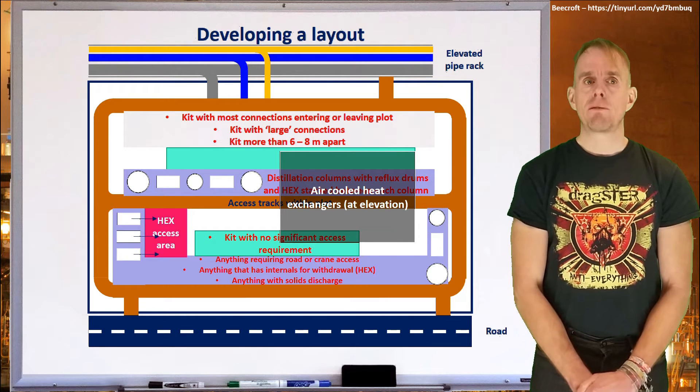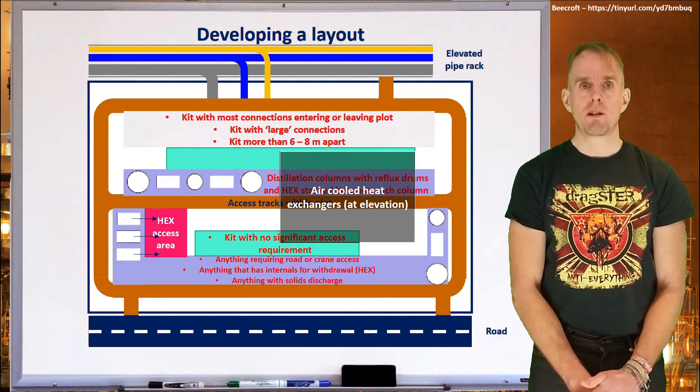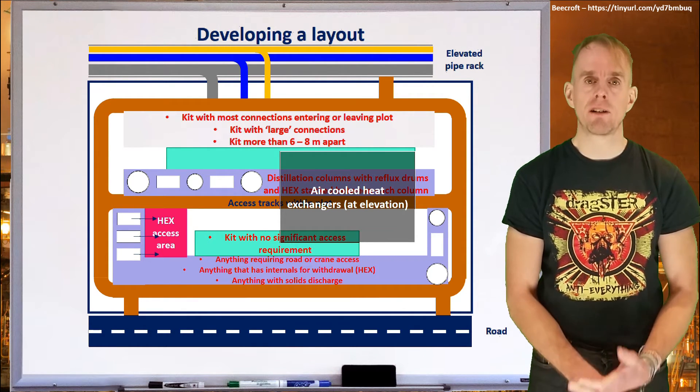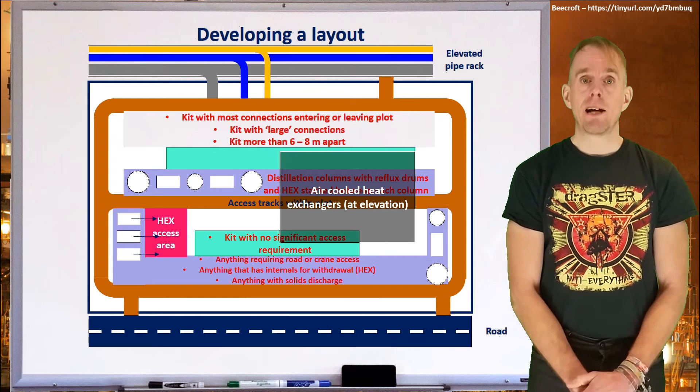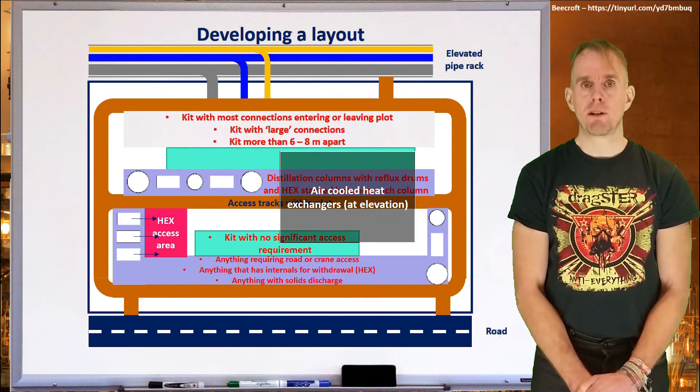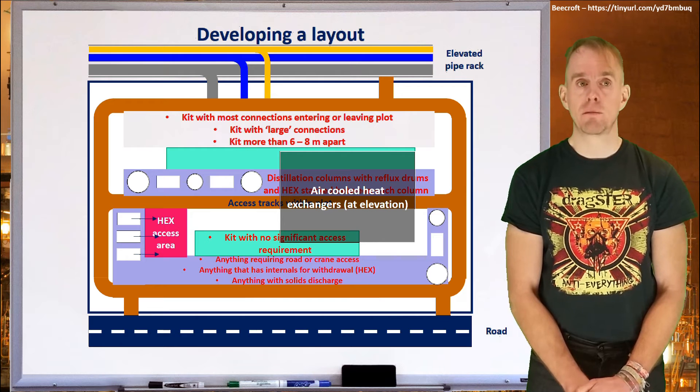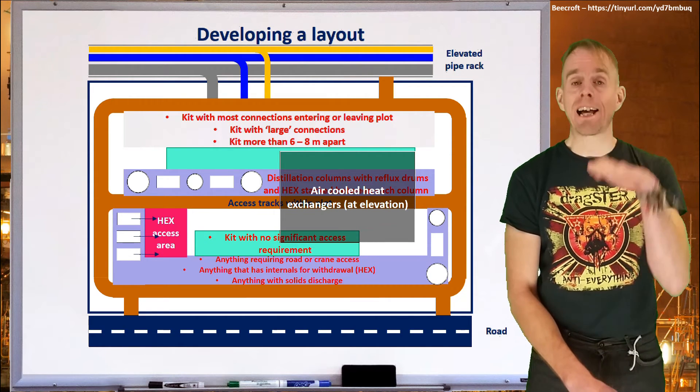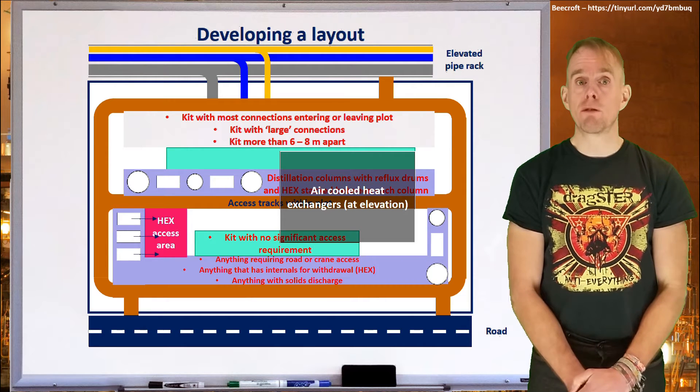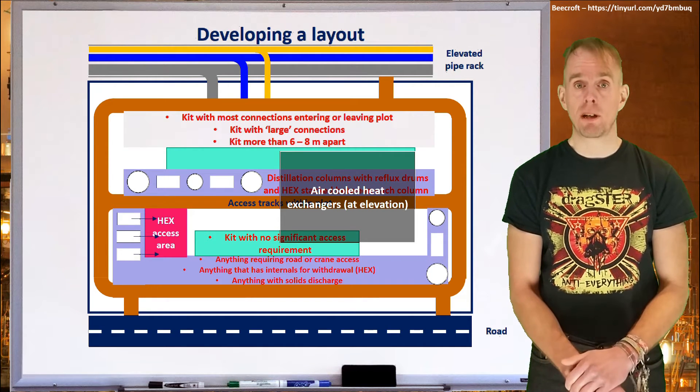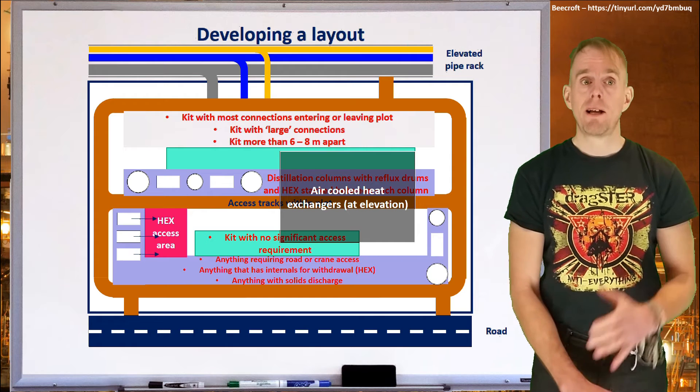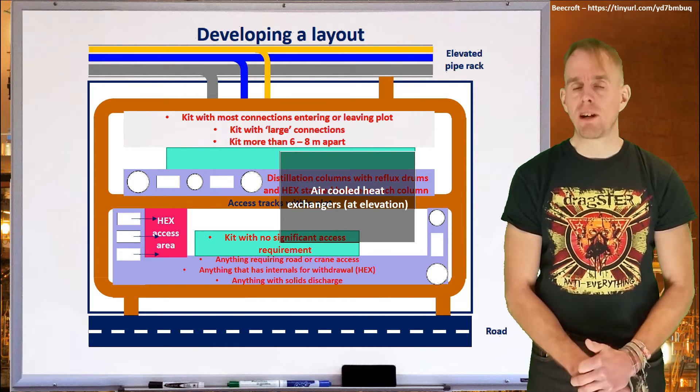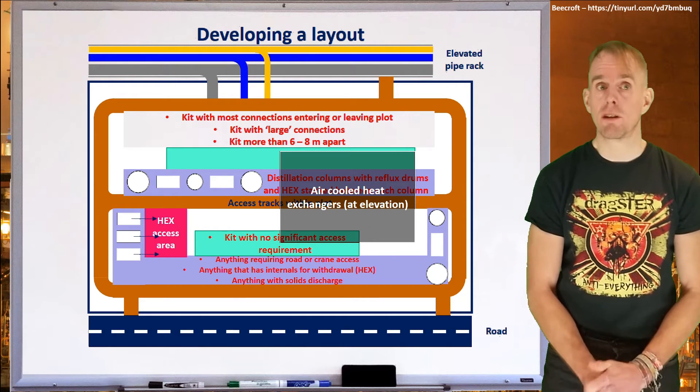Sometimes you're going to have items of heat exchange equipment, such as fin-fan coolers. Fin-fan coolers need to be at elevation because they rely on a good airflow, and you don't want the outlet airflow from fin-fan coolers to affect either people or other items of process equipment. So air-cooled heat exchangers tend to be placed at elevation, sometimes over roadways because this is not where you've got other items of equipment that could also be tall. If they're placed over roadways, remember that that therefore limits the height of any vehicles using those roadways.